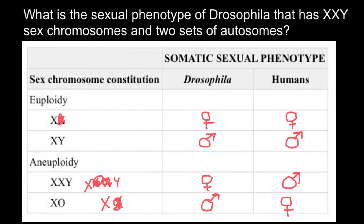So, returning to our original question: what is the sexual phenotype of Drosophila that has X, X, Y sex chromosomes and two sets of autosomes? The answer is female. That's all for today — thank you for your attention. Please subscribe, give a thumbs up if you liked this video, write your comments and questions, share with your classmates, and see you in the next video. Goodbye!